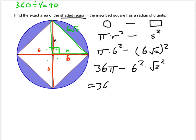So, we have 36 pi, minus 6 squared, which is 36, and root 2 squared, and the square root of 2 squared are opposites, so we have times 2.